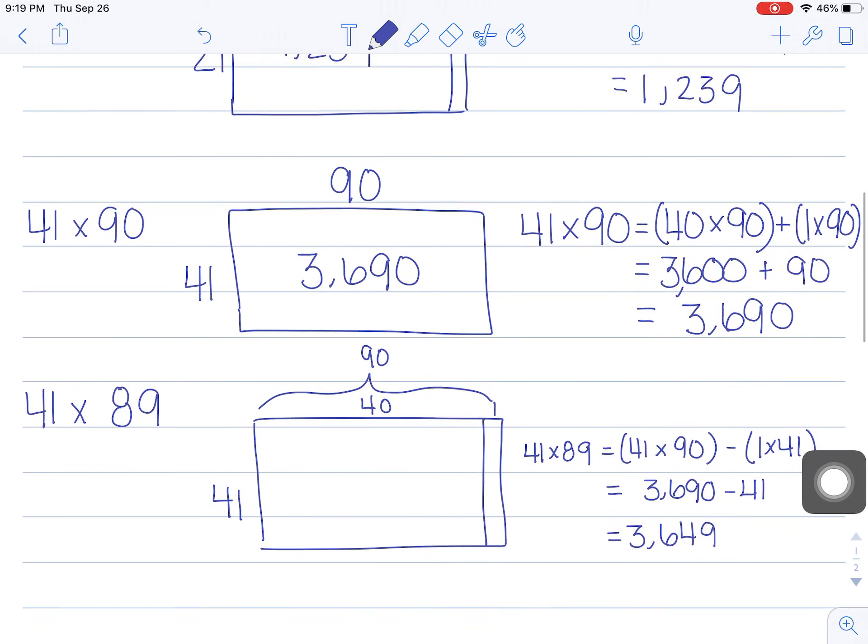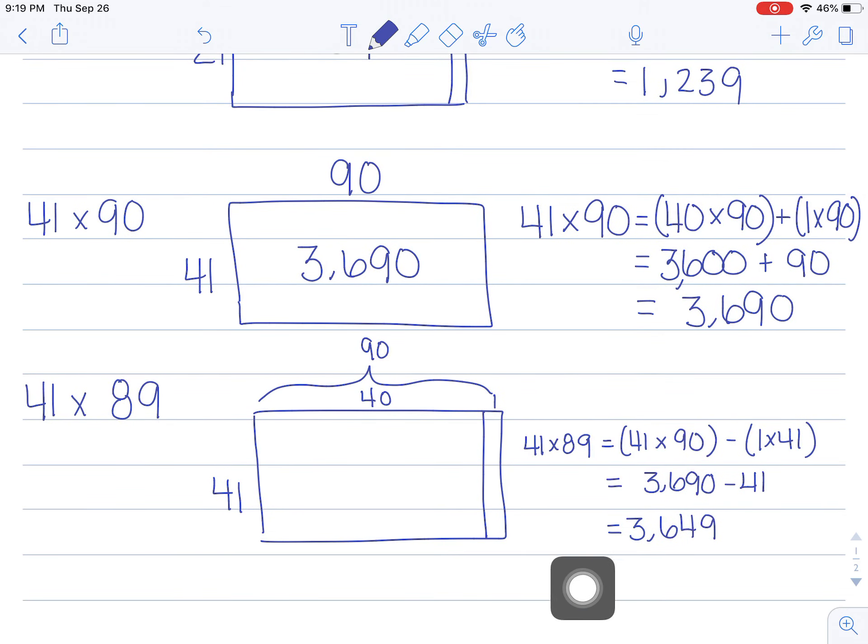If you look over here to the right, I started solving the problem. I drew an array to help solve. I'm just showing my work. So I used 41 times 90, which was from the previous problem that we just solved, and I knew that that was 3690. And then I just subtracted one group of 41, because I don't want to know what 41 times 90 is—I want to know what 41 times 89 is.